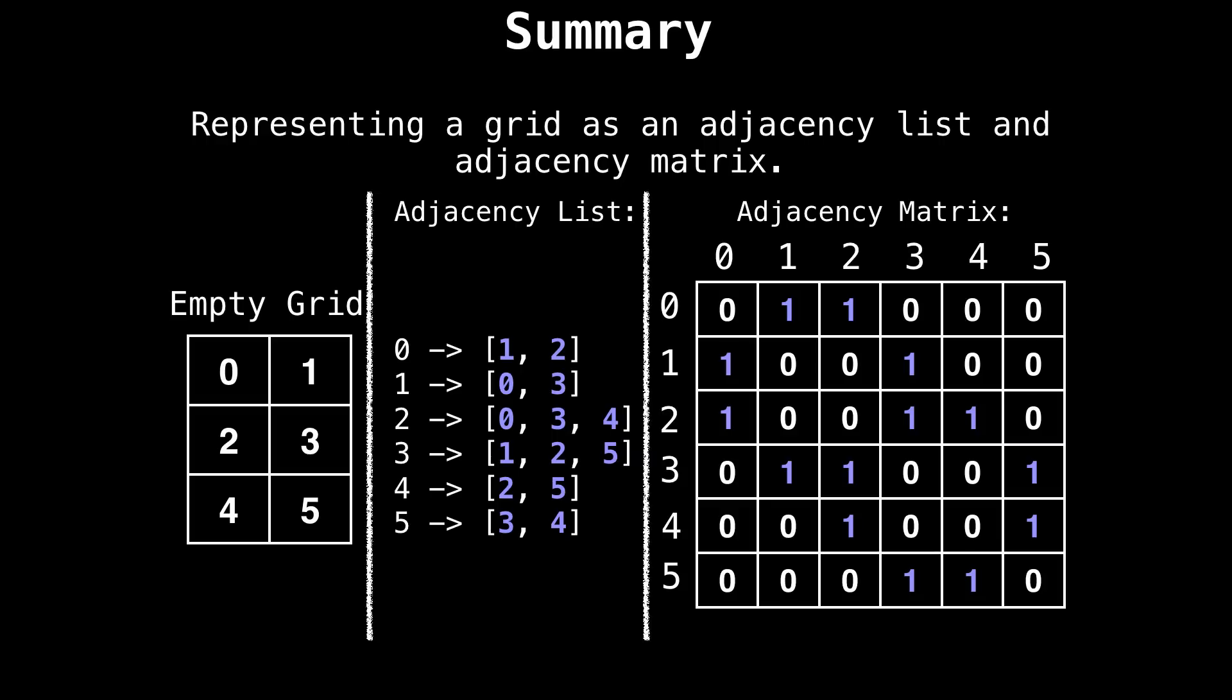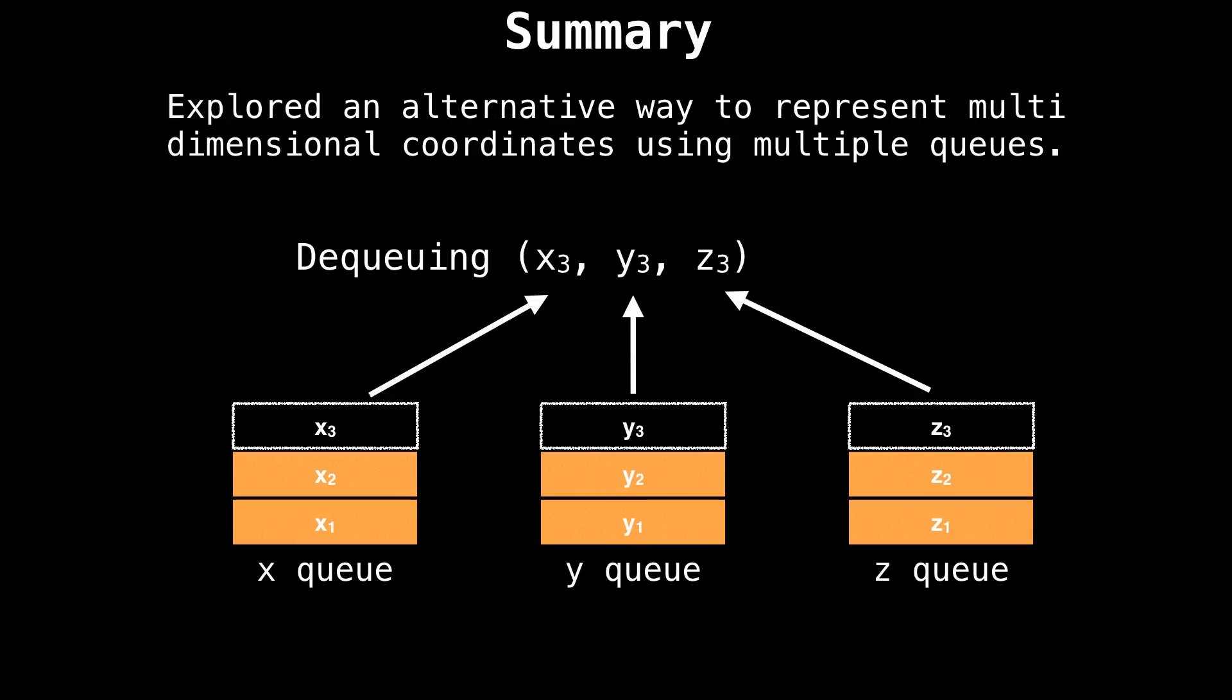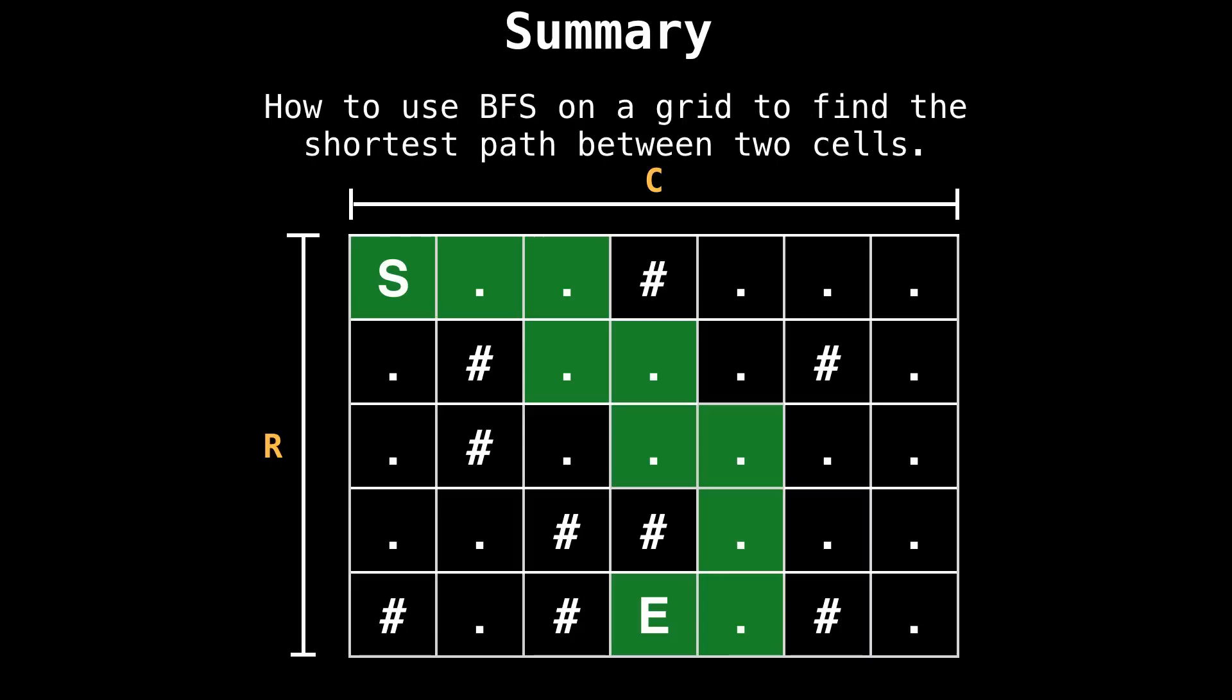So in summary, things we learned in this video are how to represent a grid as an adjacency list and adjacency matrix, how to use direction vectors to visit neighboring cells, we explored an alternative way of representing multi-dimensional coordinates with multiple queues, and lastly, we looked at how to use a breadth-first search on a grid to find the shortest path between two cells.